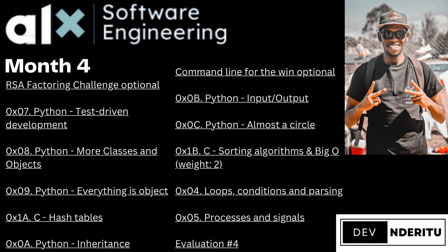I also want to mention that for projects like C stacks and queues (LIFO and FIFO) and sorting algorithms, you're encouraged to pair with someone. For C simple shell and printf, you can also choose a partner. I wouldn't recommend working alone — having someone else gives you different perspectives. I haven't gotten this far by working alone; I found peers in the same cohort to collaborate with.